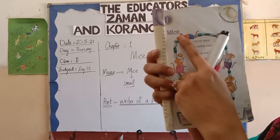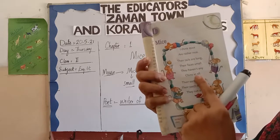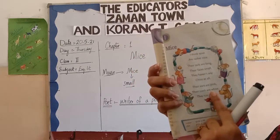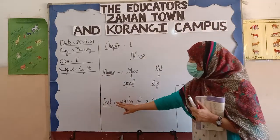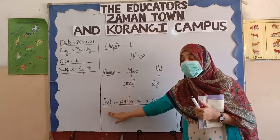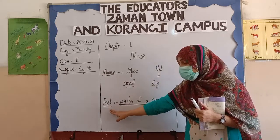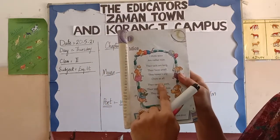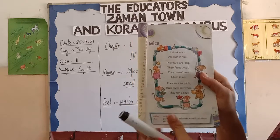In this chapter today we will read a poem. One thing you should know: who is a poet? The writer of the poem is called a poet. It means this poem is written by a poet. Okay, let's start the reading.